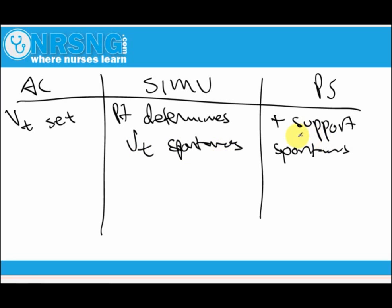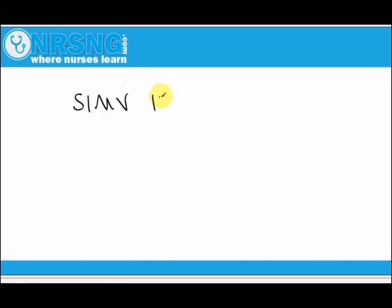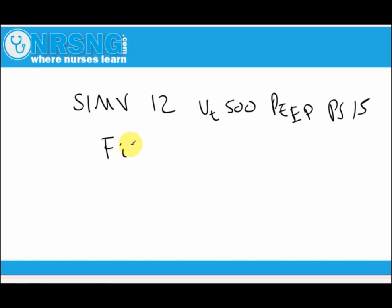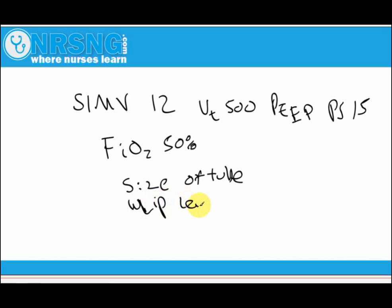When you're reporting ventilator settings to someone, you would say something like: 'This patient is mechanically ventilated on SIMV, rate of 12, tidal volume 500, PEEP of 5, pressure support 15, FiO2 50%.' You can also include the size of the tube and where the tube is at the lip — the lip length. The key things to report are mode, rate, tidal volume, PEEP, and pressure support.